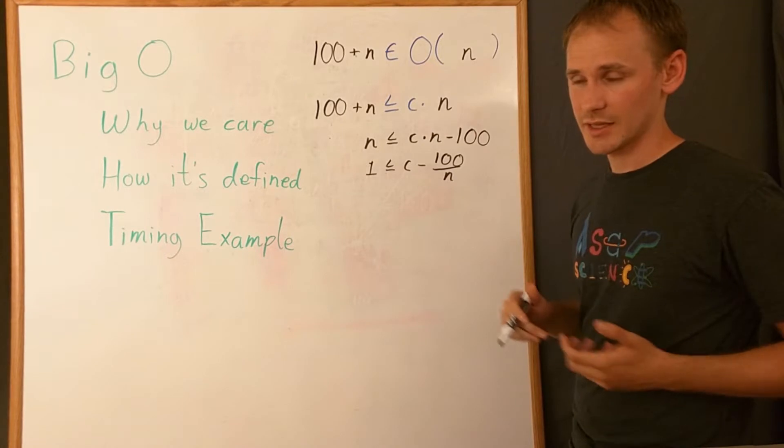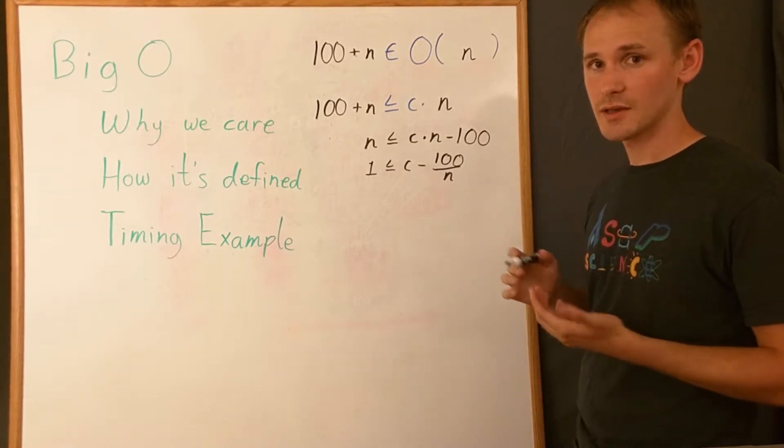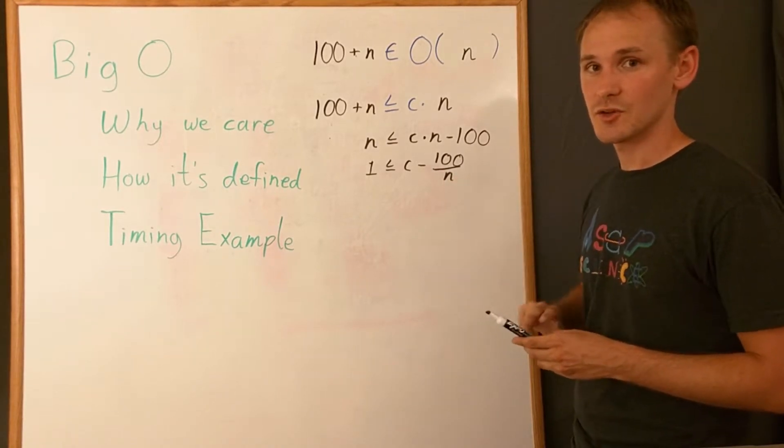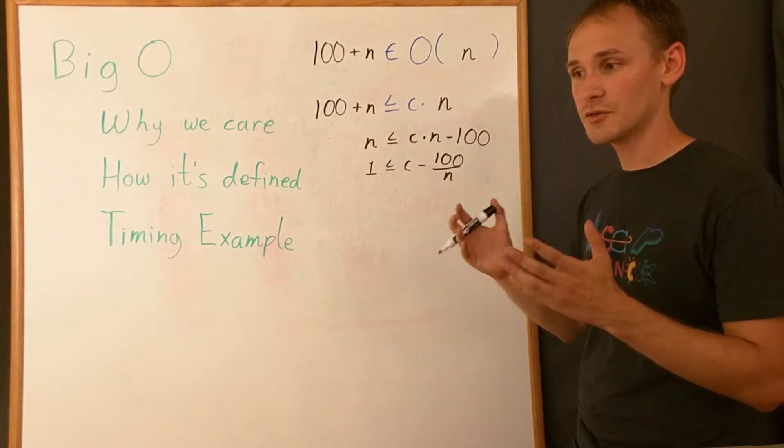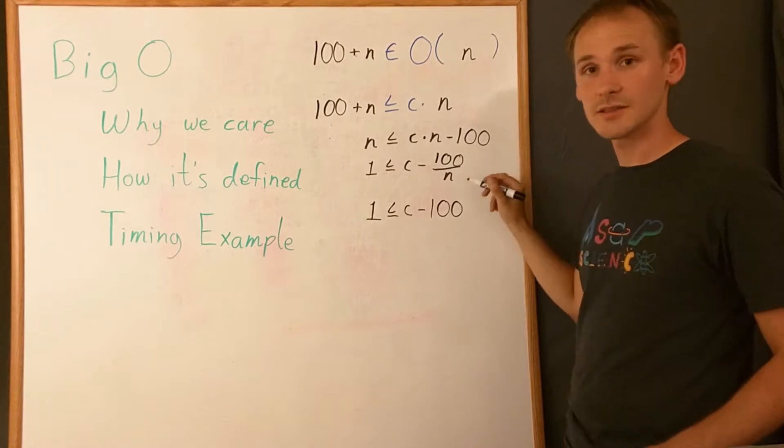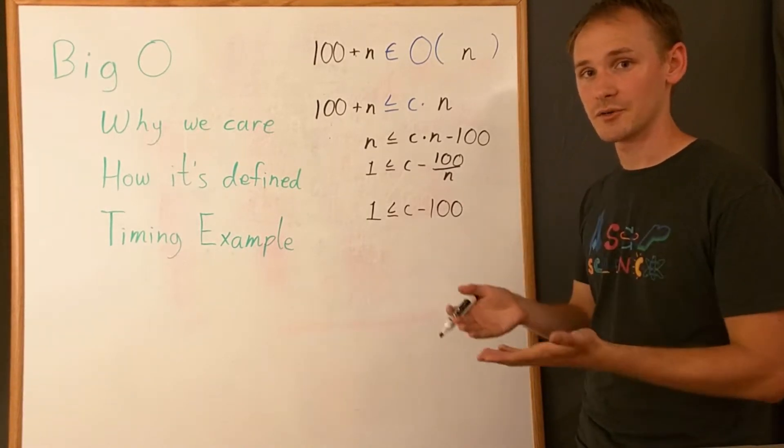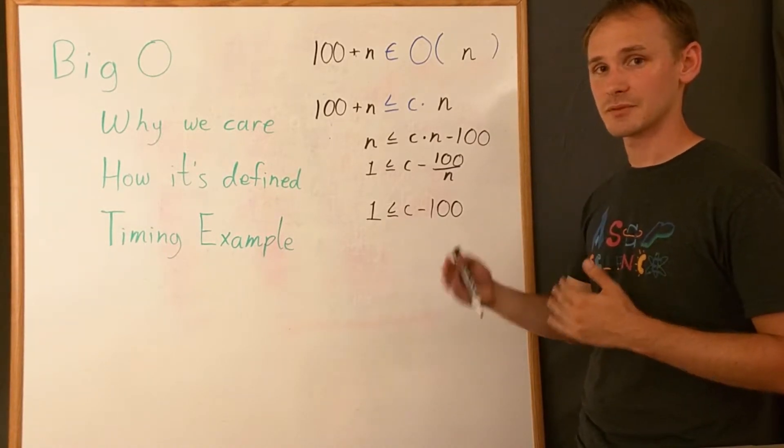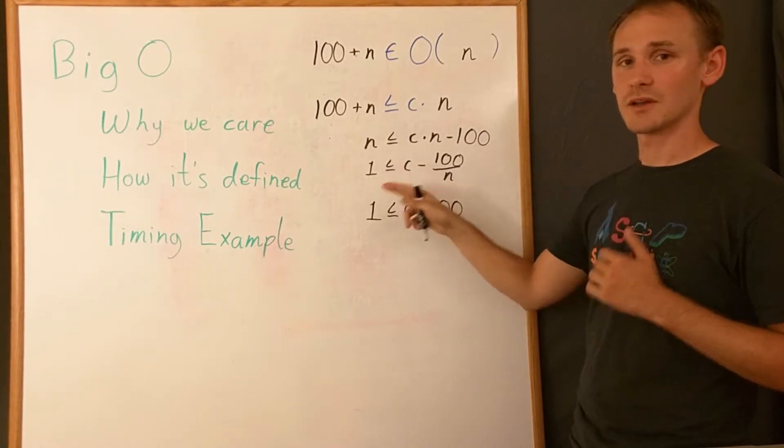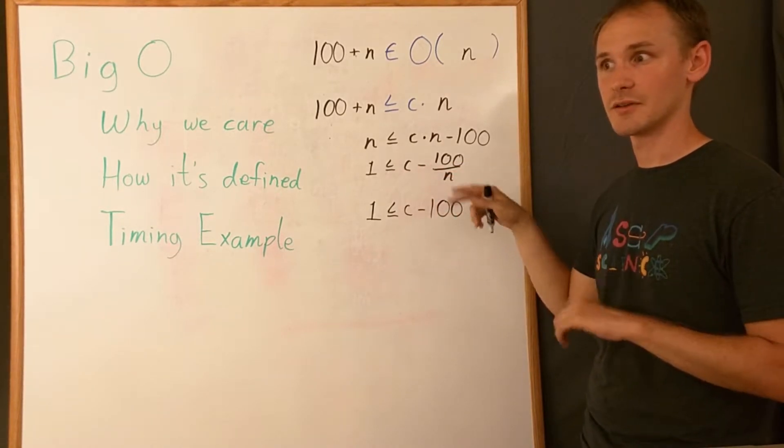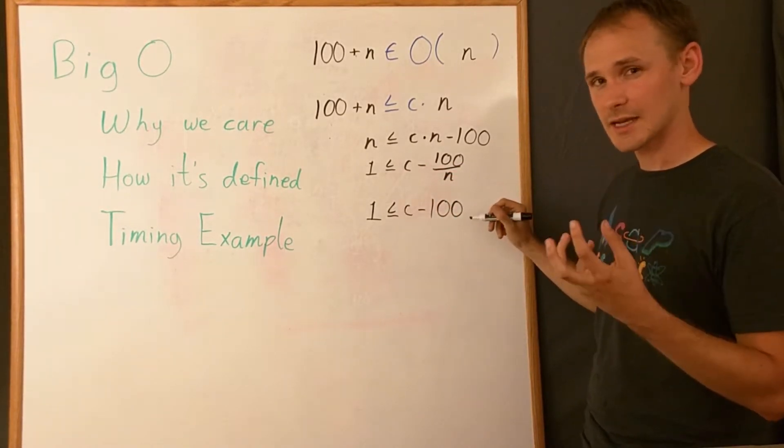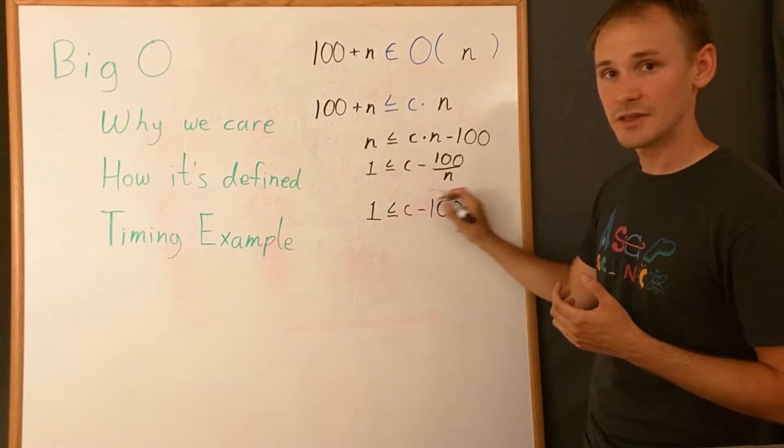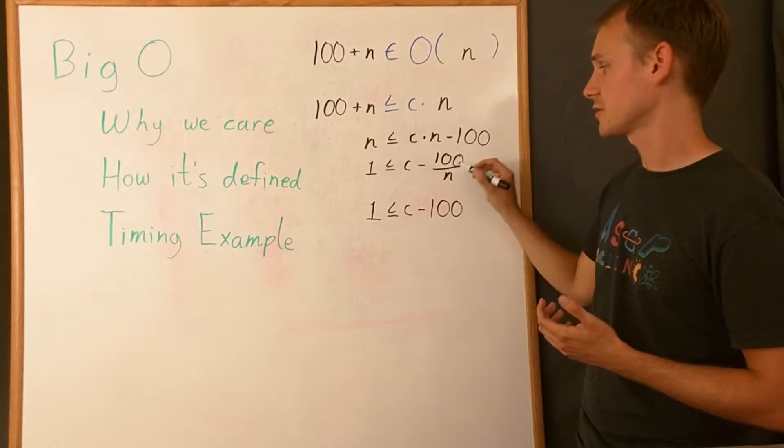In fact, if we just choose that big N is going to be one, then little n is always going to be one, which means that this term is always going to be either 100 or smaller than 100. Since this term of 100 divided by n is always going to be equal to 100 or an even smaller number, by proving that 1 is less than or equal to c minus 100, we also prove that 1 is less than or equal to c minus 100 divided by n, because we've already decided that n is going to be greater than or equal to 1. So this term right here of c minus 100 is strictly greater.